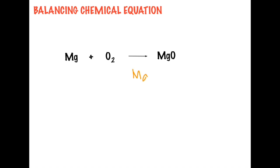Then all you do is list the atoms involved on each side of the arrow — we have magnesium on both sides and oxygen on both sides. The next step is to count the number of atoms on each side. We have one magnesium on the reactant, one magnesium on the product, two oxygen on the reactant, and one oxygen on the product. The subscript tells you how many of that element you have, so if there is no subscript number, it is understood to be one.